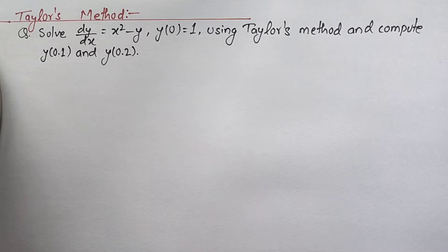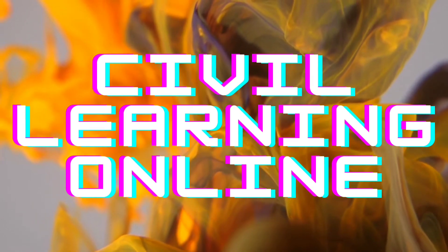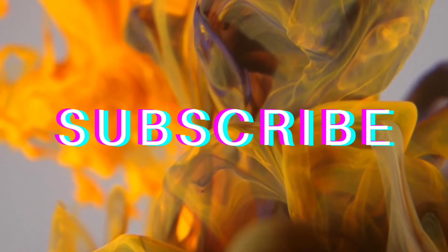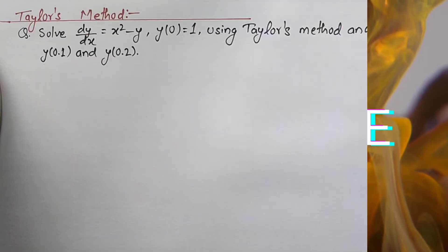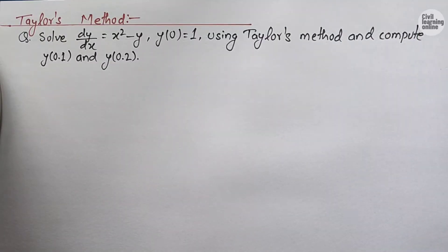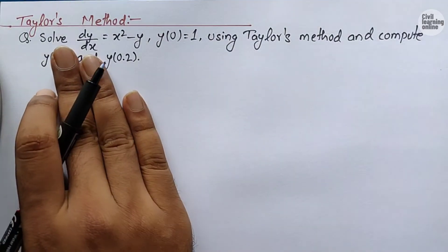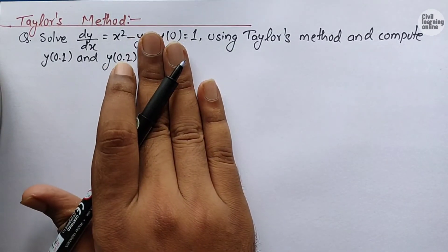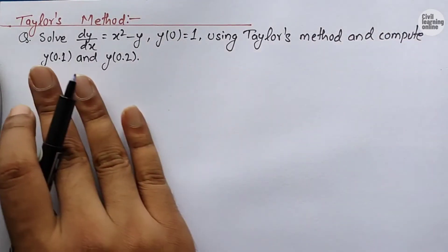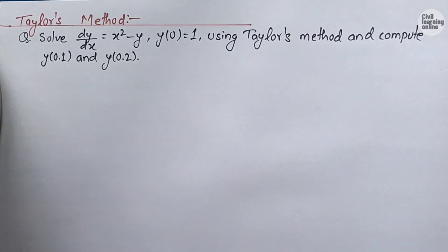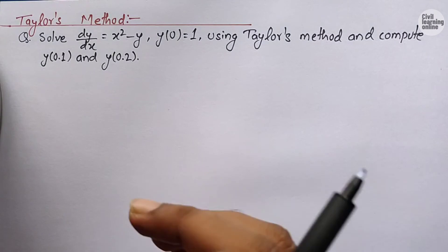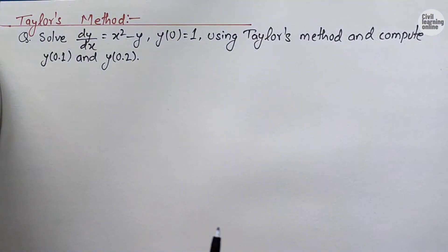Without any further delay, let's get started. First of all, let me read out the question. The question says: solve dy/dx equals x squared minus y, y(0) equals 1. Using Taylor's method, compute y(0.1) and y(0.2). I will provide the formula for Taylor's method while proceeding with this numerical.